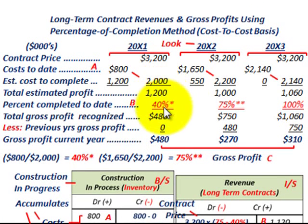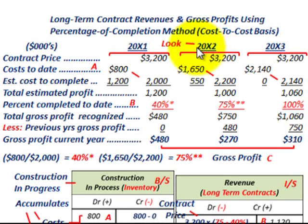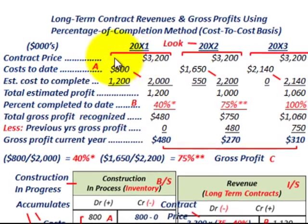The first thing we have to do is set up a table where we determine the gross profit for each of the years of this contract. We're going to have three years on the contract — 20x1 through 20x3 — but we're only going to be really concentrating on year 20x2. To do that, we first have to calculate our gross profit for year 20x1. This table is based on thousands of dollars.